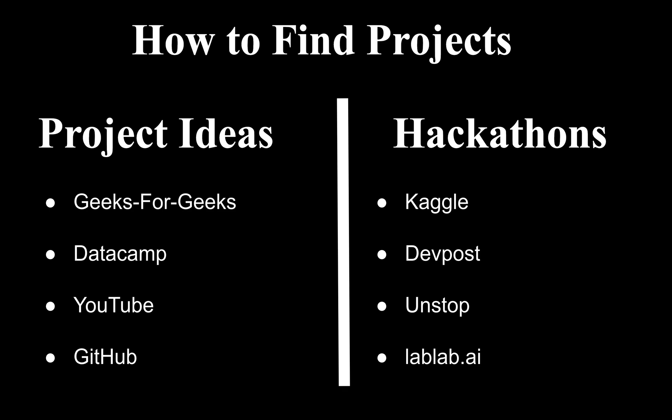To find project ideas, look at websites like GeeksForGeeks and DataCamp. YouTube is probably the best place — walk alongside channels like freeCodeCamp, build some basic apps, make minor then major changes, and come up with your own ML application. GitHub also has tons of ideas for current applications — clone them, make changes, and add your own features.